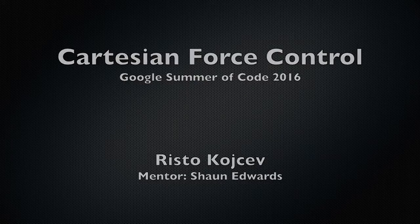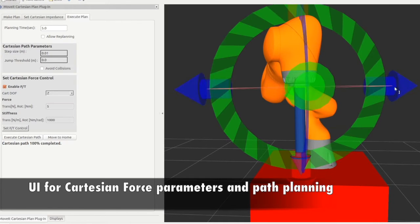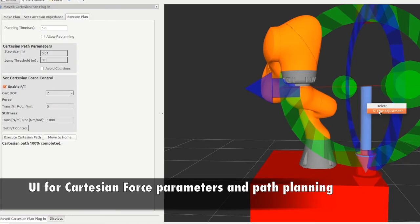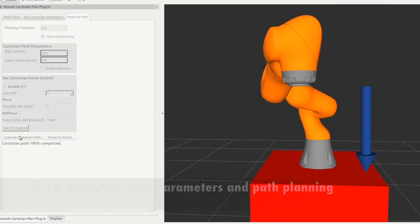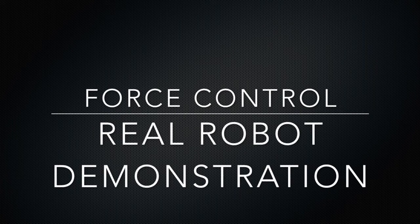For many robotic applications we desire to follow a surface while maintaining a prescribed contact force with that surface. We developed a set of ROS messages containing the necessary parameters for Cartesian force control and an easy-to-use user interface which allows the user to quickly change parameters and switch between operating modes.